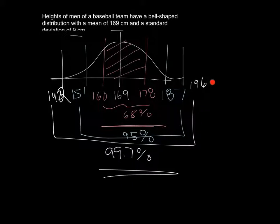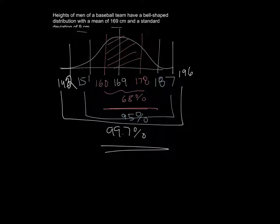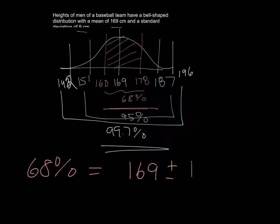And then three standard deviations would be the mean plus three times the 9. So in other words, how you're finding each one of these is: the 68% equals 169, the mean, plus and minus 1 times your standard deviation.